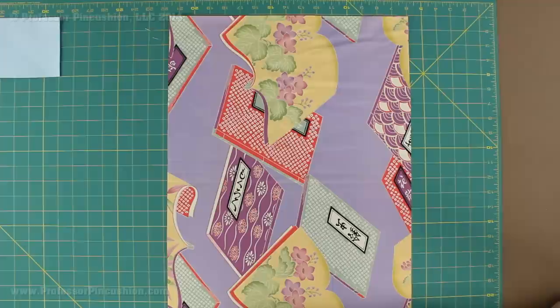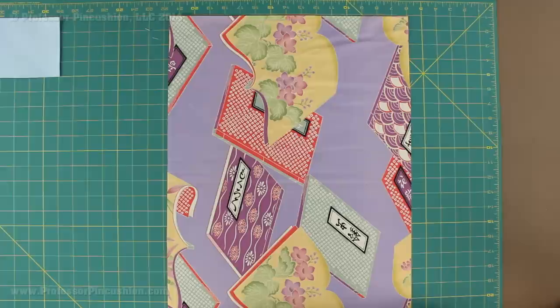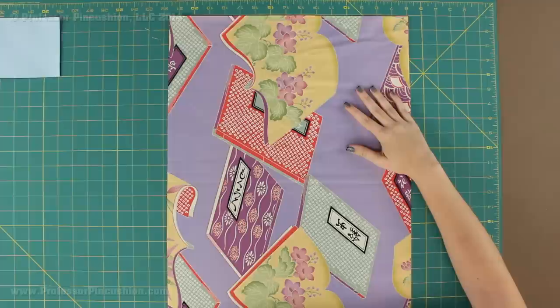To get our rouleau started, the first thing we need to do is cut our strips. Now it really depends on how long you need your strip to be, whether it's going to be a spaghetti strap or a button loop. But what I like to do is always cut out my strip so that it's on the bias. I have a small piece of fabric here, about the size of a fat quarter which is 18 by 22 and a half.